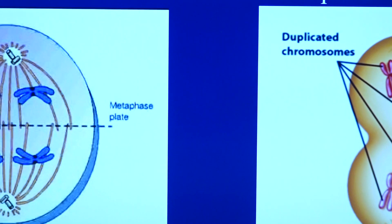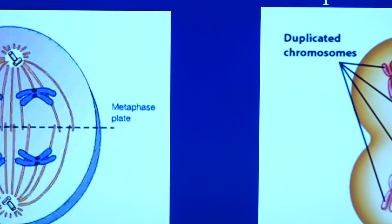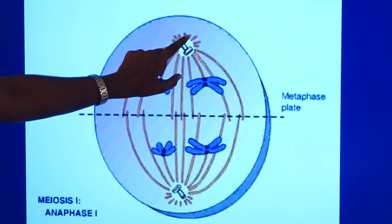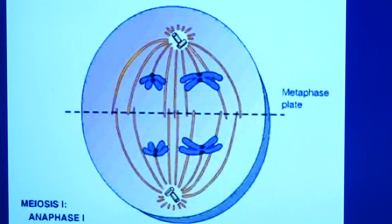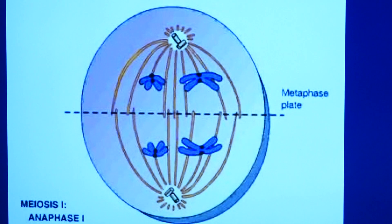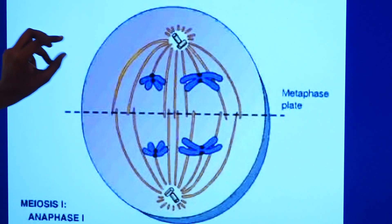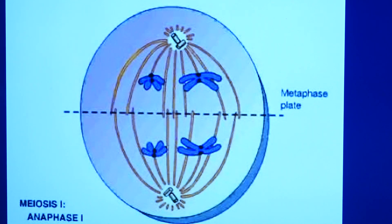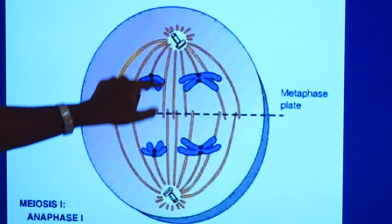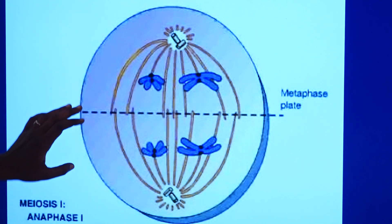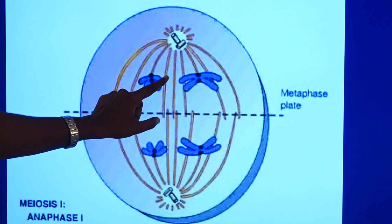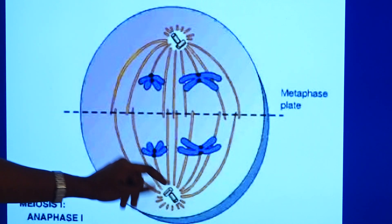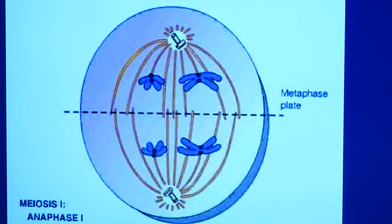The next stage is anaphase I. In anaphase I, the tetrads move to completely opposite poles. In the case of mitosis there will be one chromatid moving towards the opposite pole, but in the case of anaphase I there will be two chromatids, and those two chromatids will be moving towards the opposite pole.